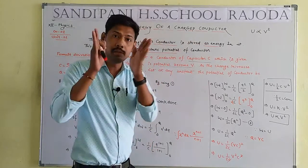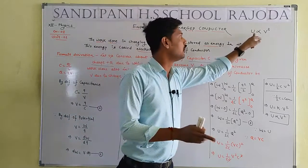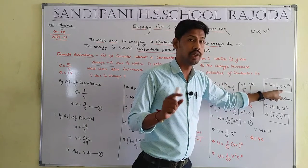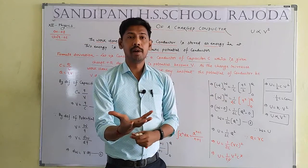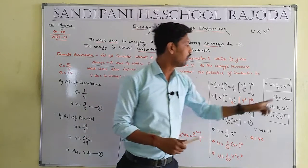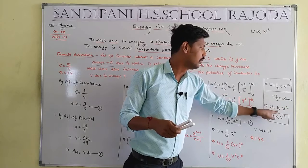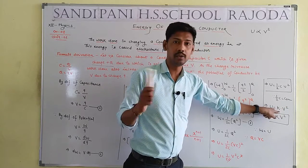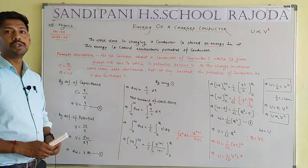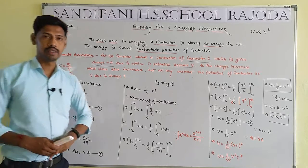If the exam asks only for the energy of a charged conductor, write U equals 1 by 2C V squared. But if asked to prove U is directly proportional to V squared, note that 1 by 2C is a constant — just like a bucket has a fixed capacity. Since 1 by 2C is constant, U is directly proportional to V squared. This completes the proof.